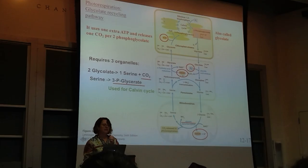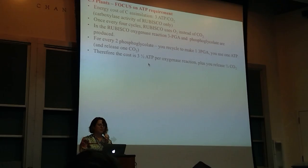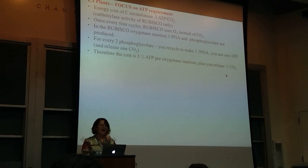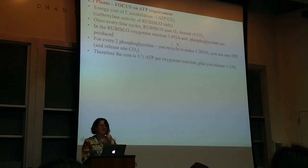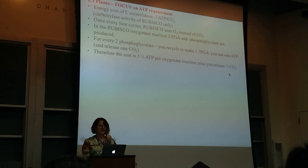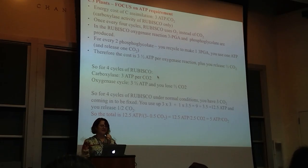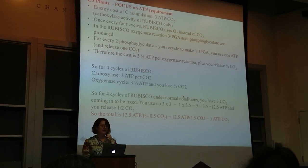You're still using the ATPs you usually use to go around. So you end up having a cost of 3.5 ATPs per oxygenase reaction and you release 0.5 CO2. That's because for every oxygenase reaction you get 1 3-PGA and 1 phosphoglycolate. But this cycle uses 2 phosphoglycolates, so instead of counting it as 1 ATP I counted it as 0.5 ATP, and instead of 1 CO2 I counted it as 0.5.